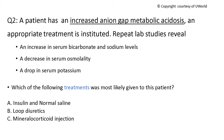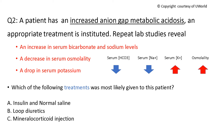Based on this, can you solve this question? A patient has an increased anion gap metabolic acidosis — the exact cause isn't specified, as there are many causes. An appropriate treatment is instituted. Repeat lab studies reveal an increase in serum bicarbonate and sodium, a decrease in serum osmolality, and a drop in serum potassium. For a treatment to cause this, there must have been a problem in those same parameters — the treatment is reversing the disturbance.